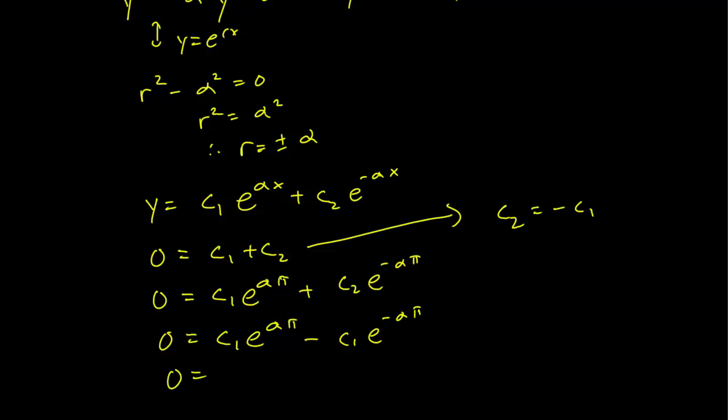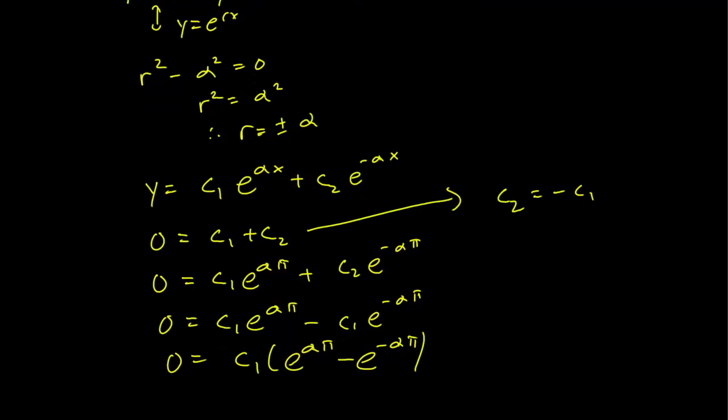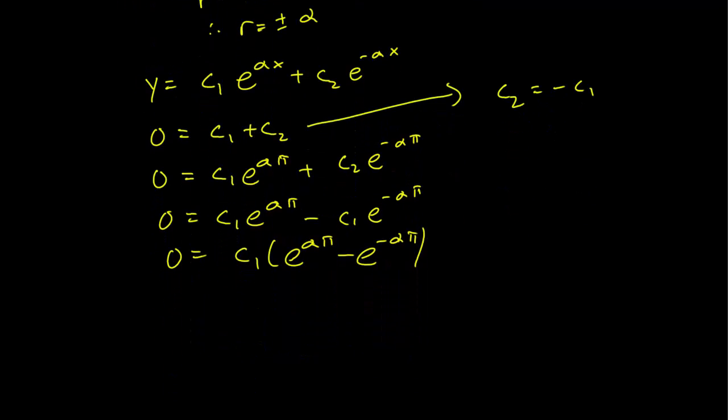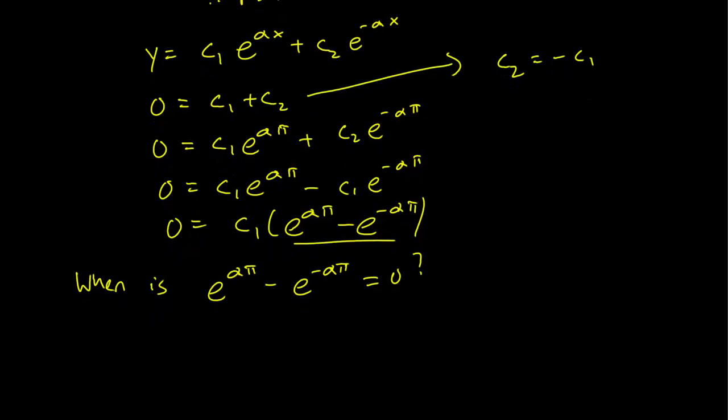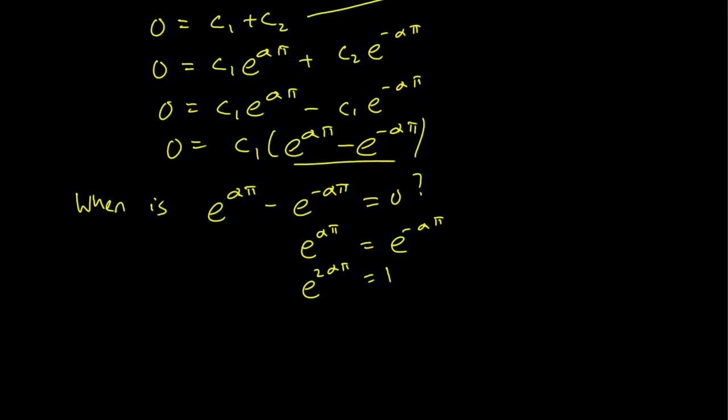But this simplifies to c₁(e^(απ) minus e^(-απ)) equals zero. So the question is, when is e^(απ) minus e^(-απ) zero? We can see what happens when that's true. So e^(απ) is equal to e^(-απ) or e^(2απ) equals 1. Taking the logs of both sides, we can just get that 2α pi is equal to log 1 equals 0.